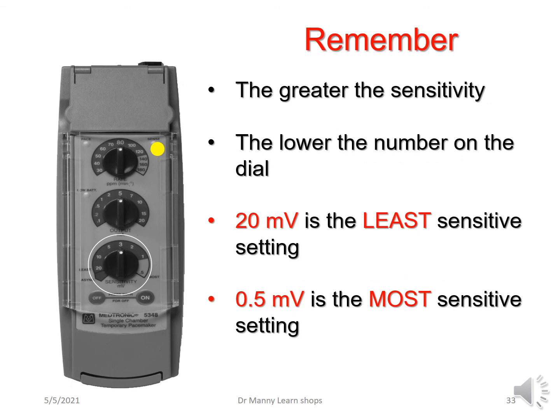Remember: the greater the sensitivity, the lower the number on the dial. 20 millivolts is the least sensitive setting — click it into asynchronous mode and there's no sensing. 0.5 millivolts is the most sensitive setting. So 0.5 is not the least — it's the most sensitive. And 20 millivolts is not the most sensitive — it is the least sensitive.